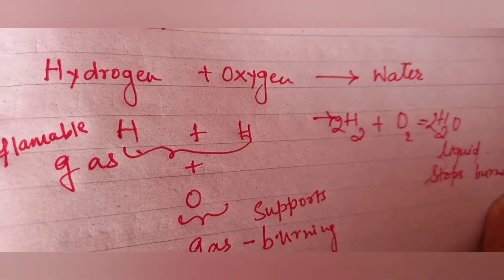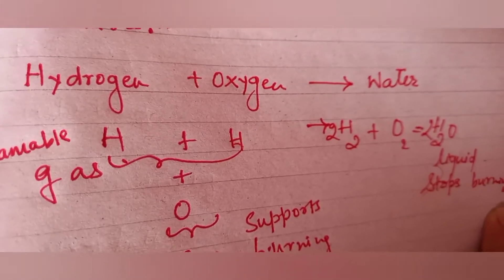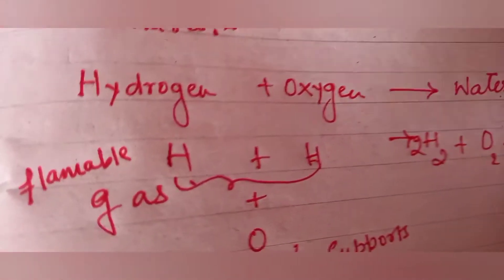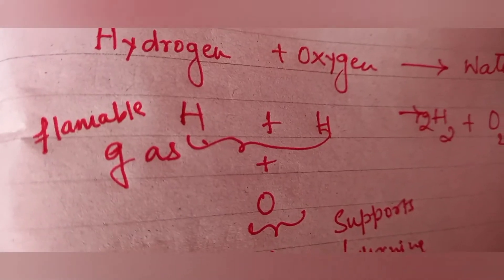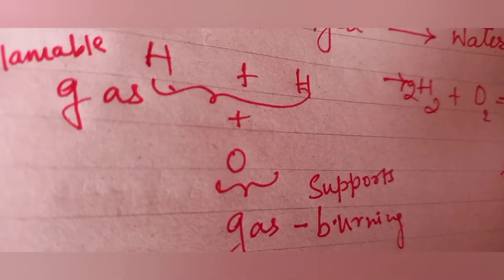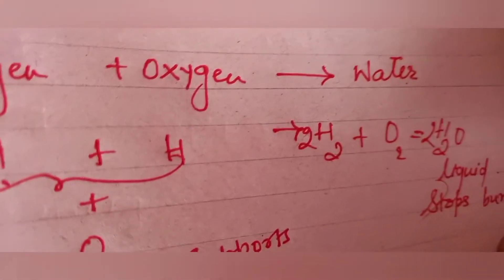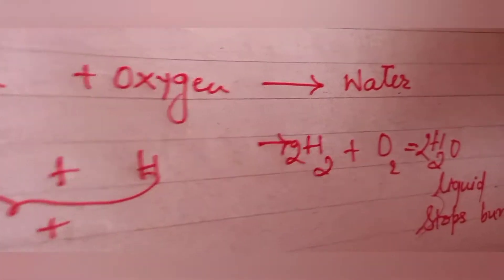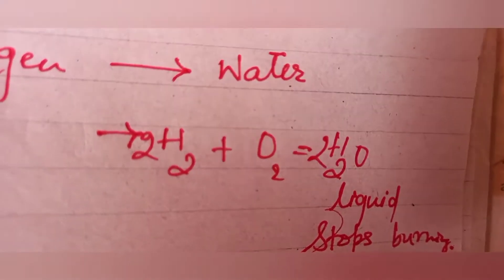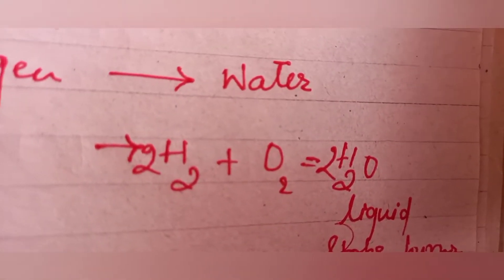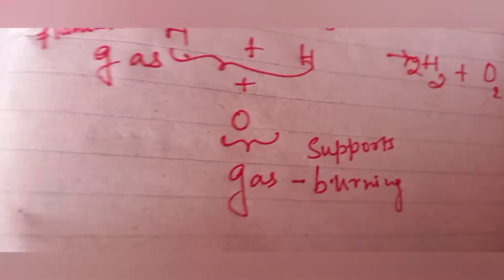Understand this with the help of a very simple example. We drink water every day. Water is made up of hydrogen and oxygen. Hydrogen is a gas, oxygen is a gas, and both of them support burning. But after chemically combining, when they combine and form water, water is a liquid — so the properties change.